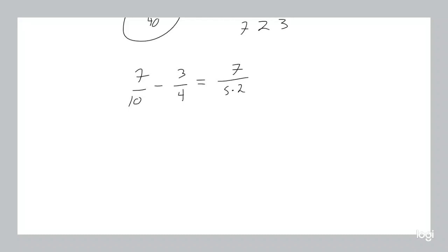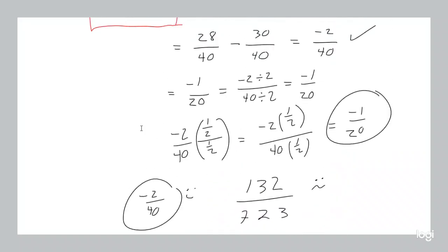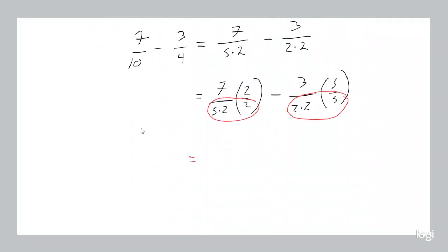See that 10 is 5 times 2, and that 4 is 2 times 2. To get a common denominator, that first term you just need to multiply it by 2 over 2, and that second term you just need to multiply it by 5 over 5. That way you have 2 times 5 times 2 in the bottom for both terms. So what we have is 14 — that's 7 times 2 — divided by 20, which is 5 times 2 times 2. Minus 15 — that's 3 times 5 — divided by 20, which is 2 times 2 times 5. That gives us negative 1 over 20. We didn't even have to reduce.